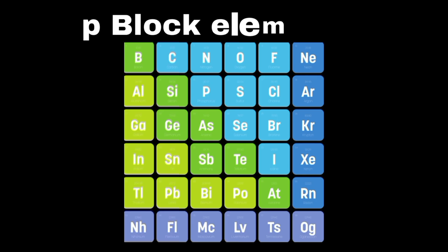The members of groups 3A to 8A are called P block elements, because their valence electrons lie in P orbitals.